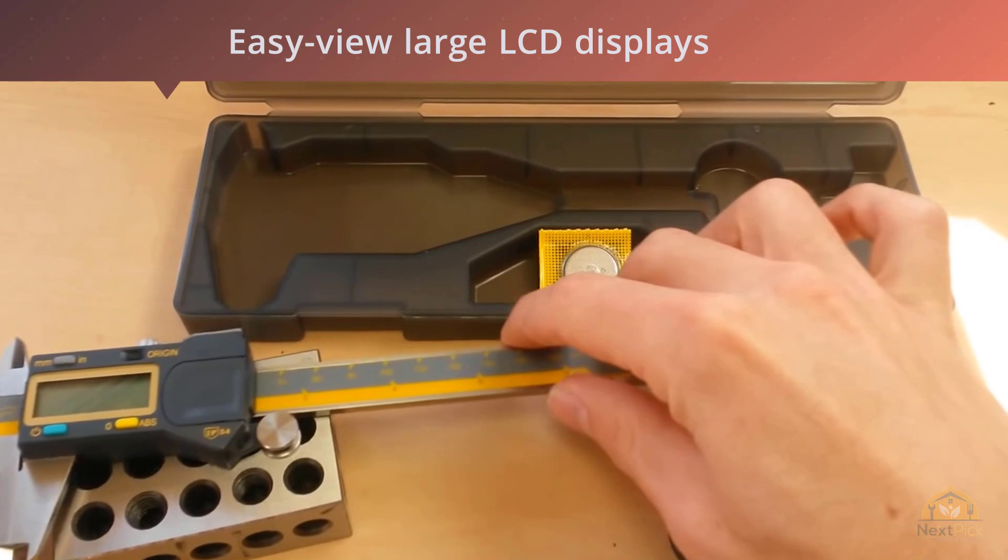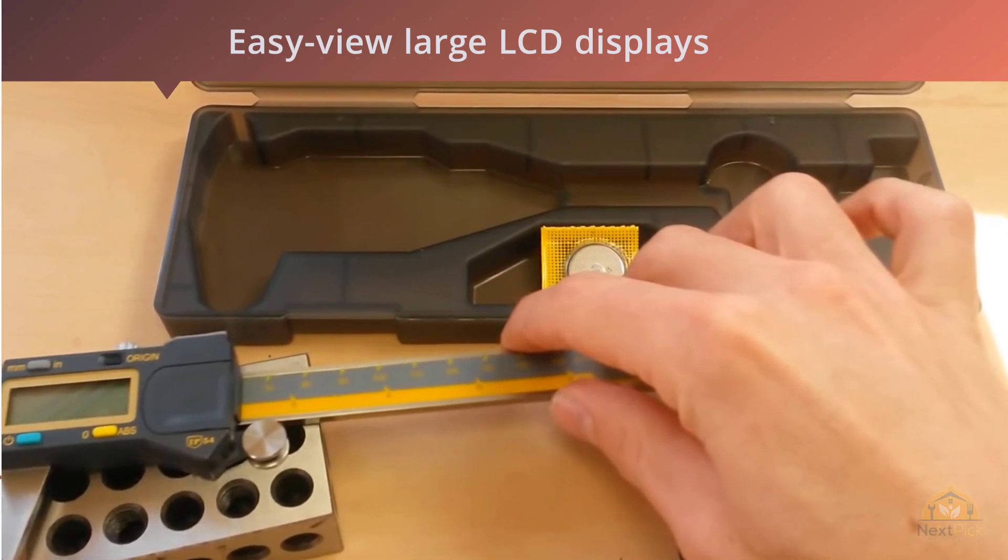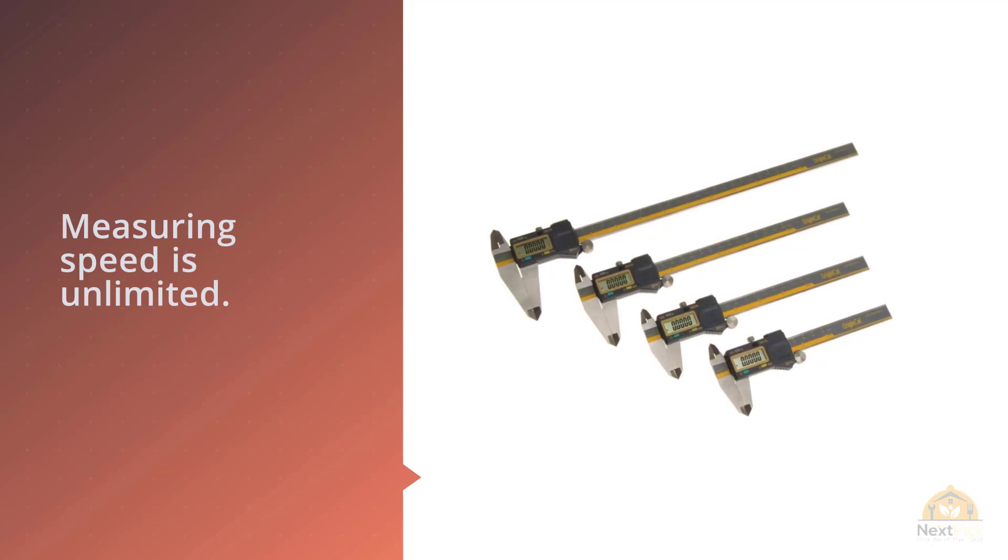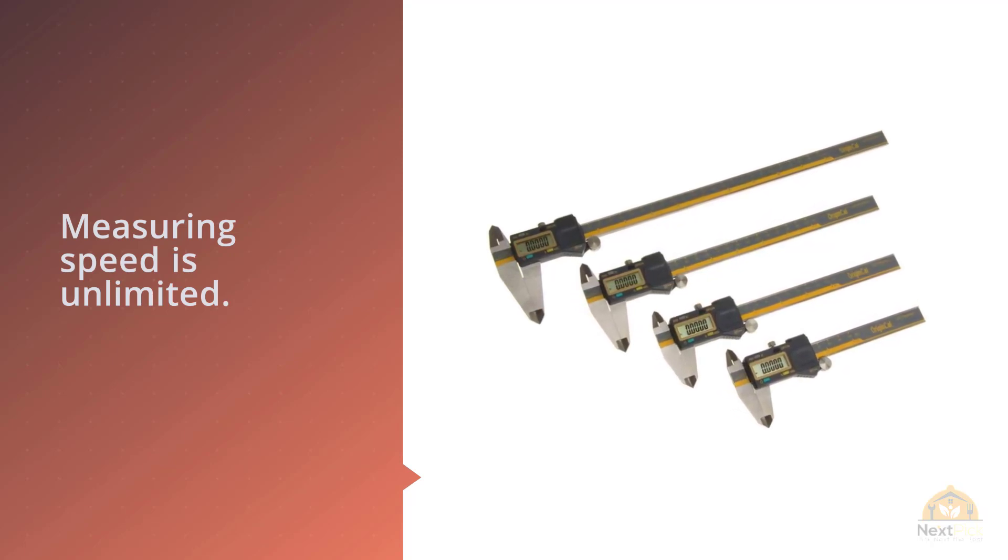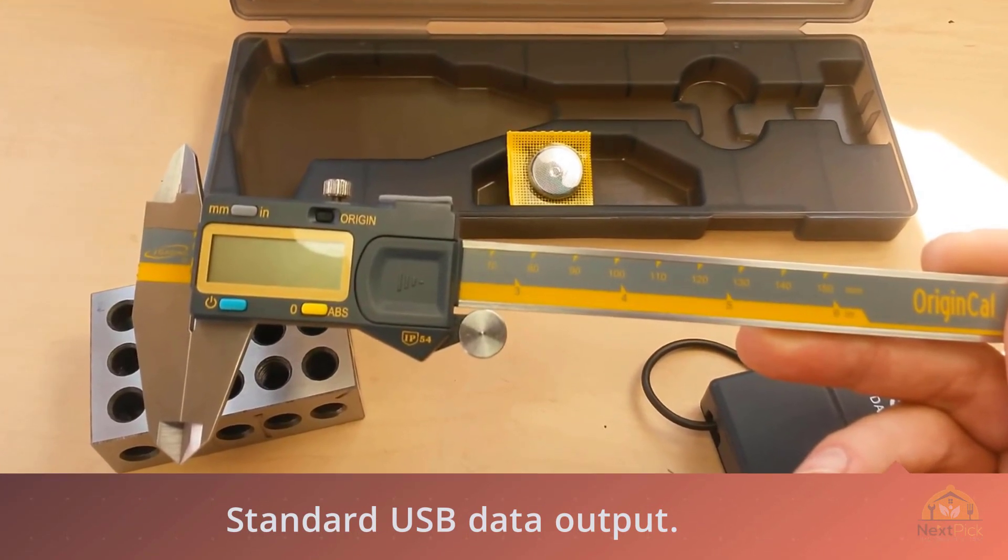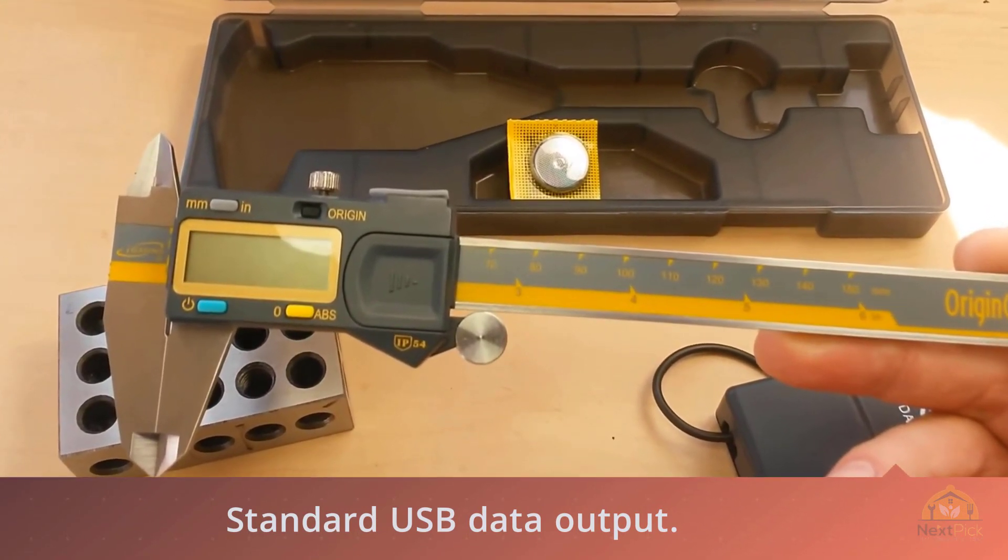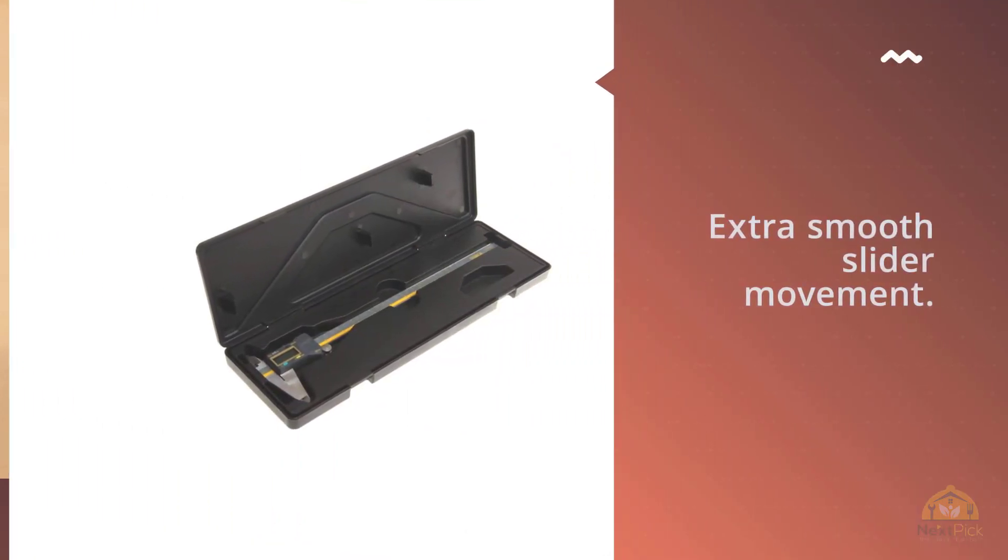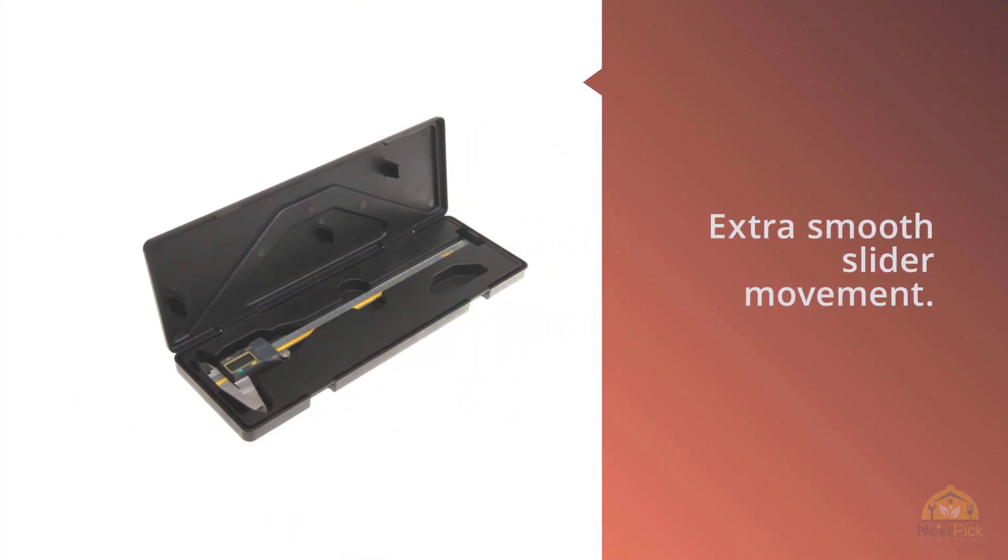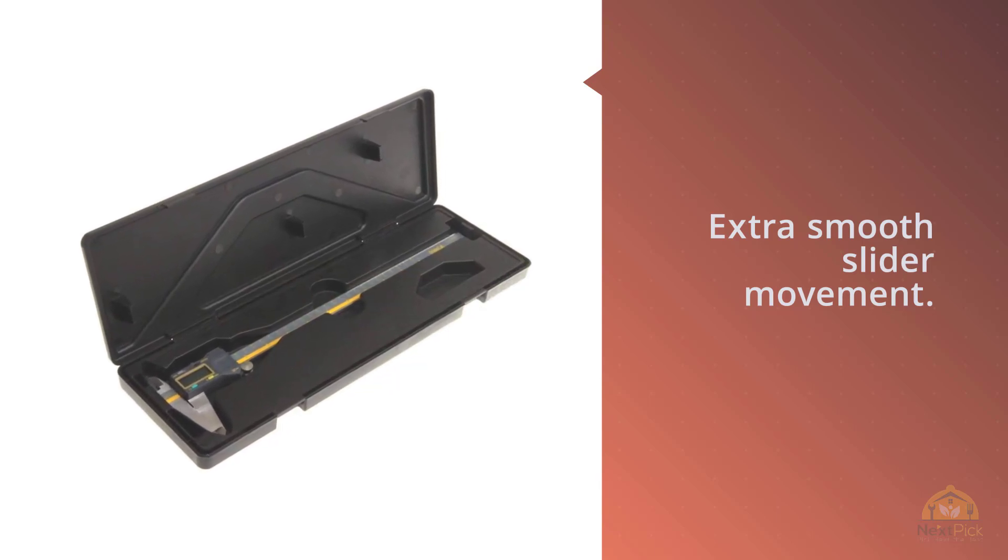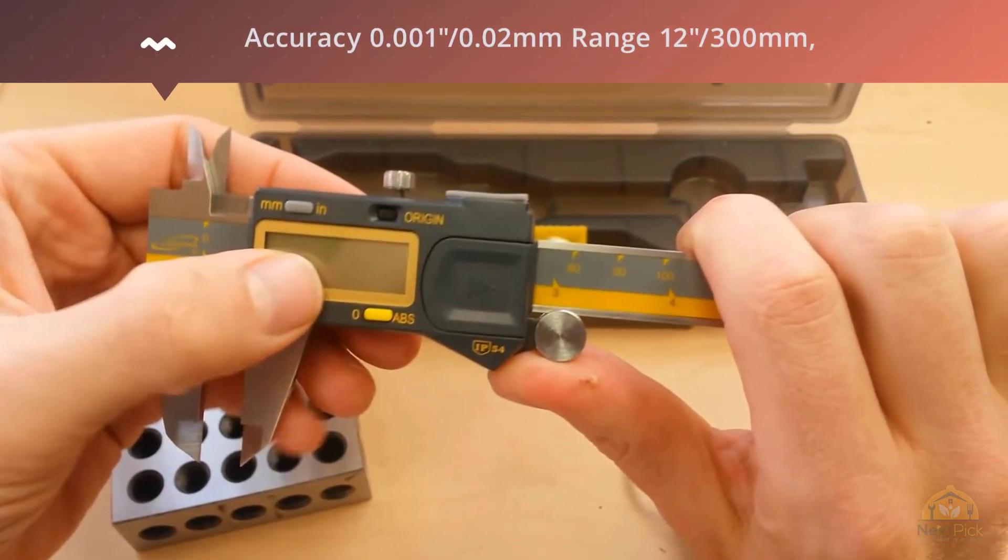It's not necessary to reset zero. The measuring speed is unlimited. Standard USB data output, high quality surface finish for extra smooth slider movement. Its resolution: 0.0005 inches, 0.01 millimeter. Accuracy: 0.001 inches, 0.02 millimeter. Range: 12 inch, 300 millimeters. IP54 splash water and dust resistant, measuring speed unlimited, protection rating IP54 humidity and dust resistance.